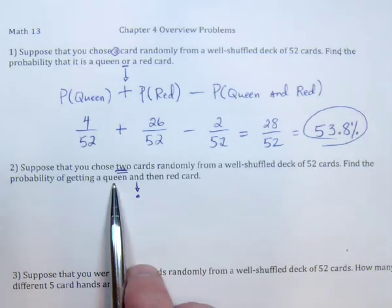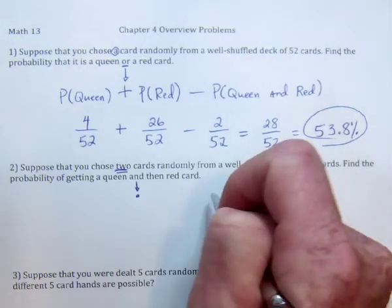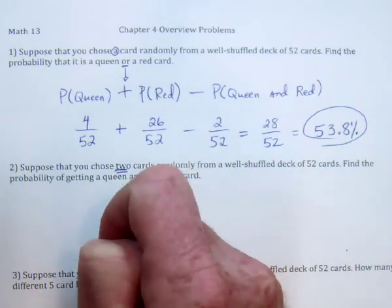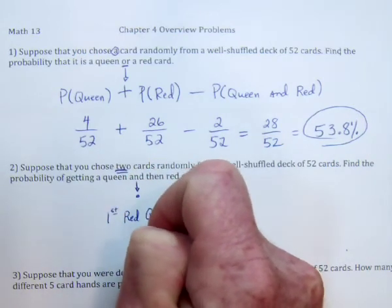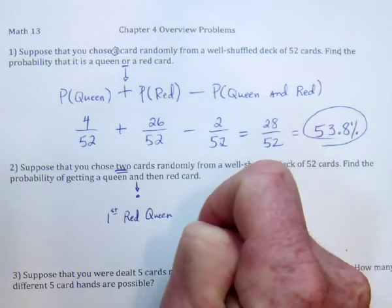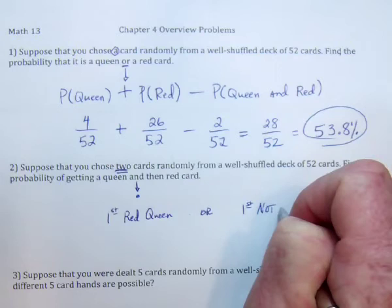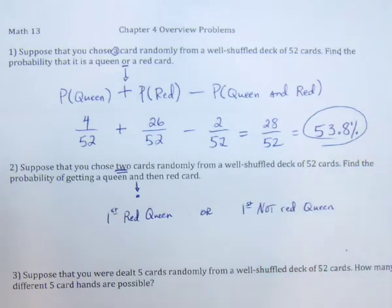For the second card to be red, there's not 26 red ones left, because when I got that first card — the queen of hearts — I took out a red card. But what if the first card was the queen of spades? Then when I take that one out, there are still 26 red cards. So the first thing we have to do is divide this into two cases, and because it's 'or,' we're going to add these two situations together.